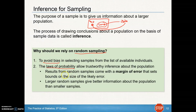When we collect data using random sampling, there is usually a margin of error that sets bounds on the size of the error. When we set the number of people we're choosing, we can also choose the margin of error, because there will naturally be some difference between the sample and the actual population. The larger the sample, the better information you get — a sample of a thousand is a lot better than just ten people.